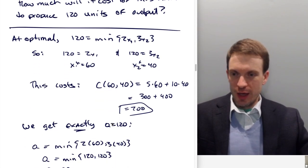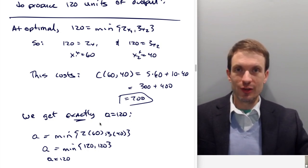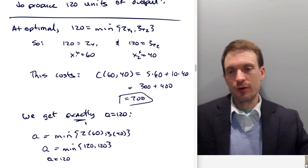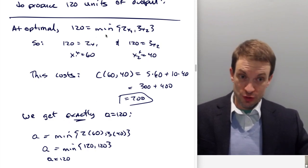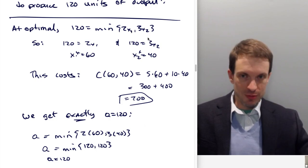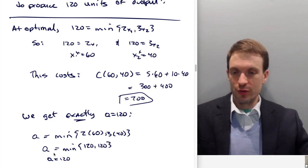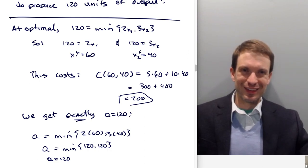And we get exactly 120 units. So here, I'm just verifying. So we actually solved the problem already. Now I'm verifying that we get exactly 120 units. That's important for minimizing costs without waste. So sure enough, we have two times 60 is 120. We have three times 40. That's also 120. So q is equal to the minimum of 120 and 120. That's awesome, because it's exactly the 120 we want to produce. So, okay. Very good.